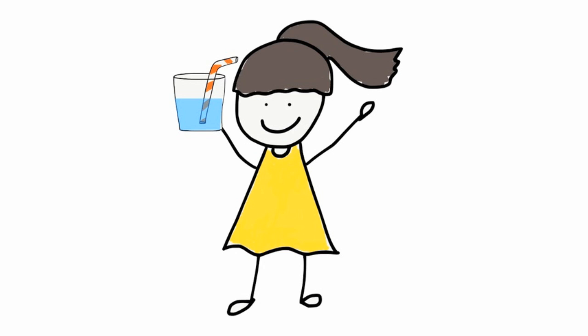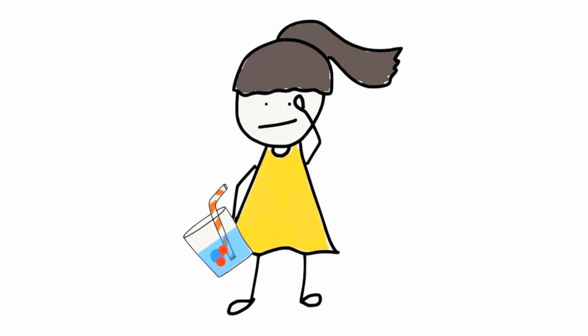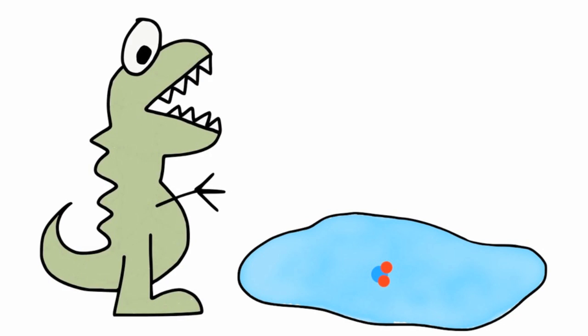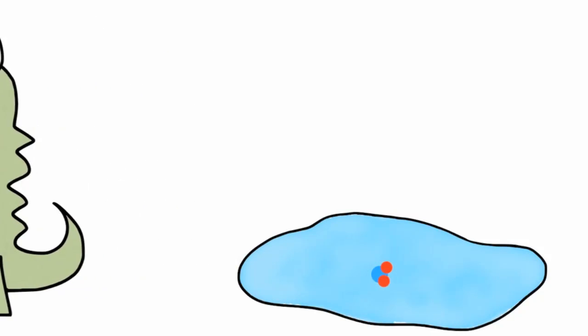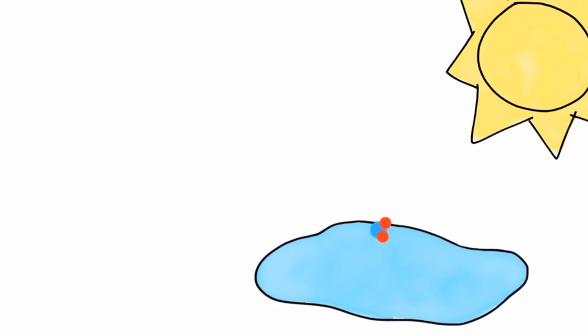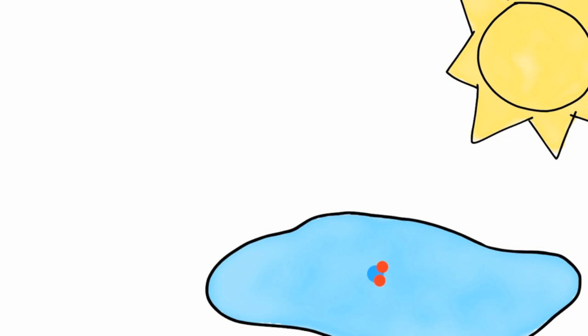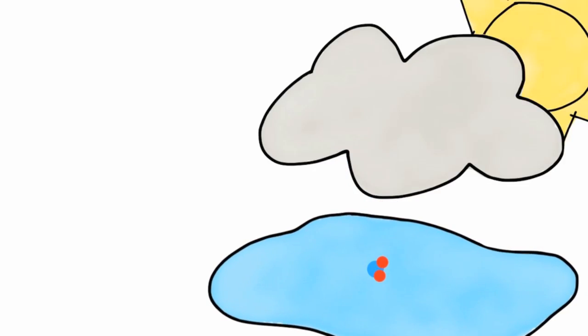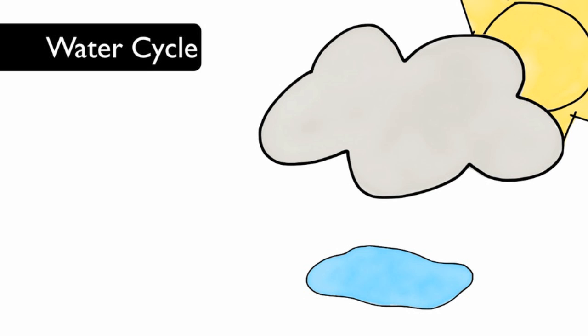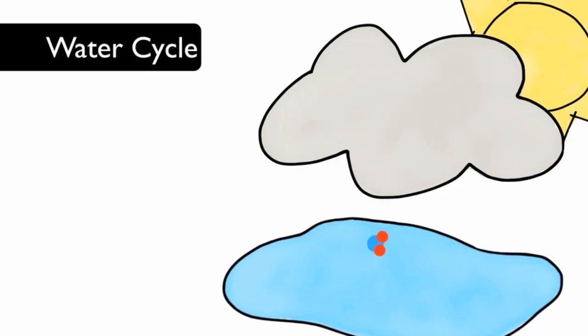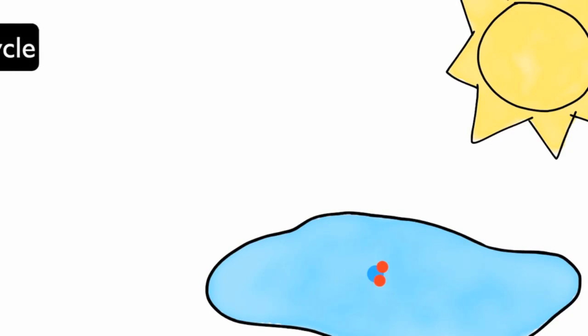The Water Cycle. Have you ever taken a sip of water and wondered where it came from? The very same water that you drink daily could have been consumed by a dinosaur millions of years ago. The same water molecules have been cycled throughout the Earth since the beginning of time. Water changes from solids to liquids and gases and then back again. The continual movement of water in our environment is called the Water Cycle. Let's take a look at the path that a water molecule could take.